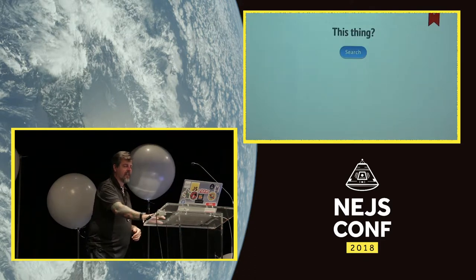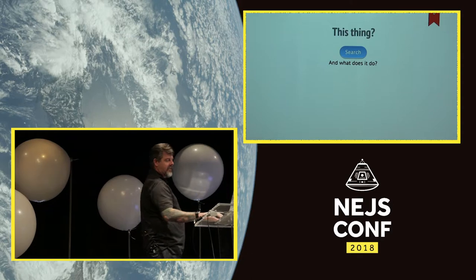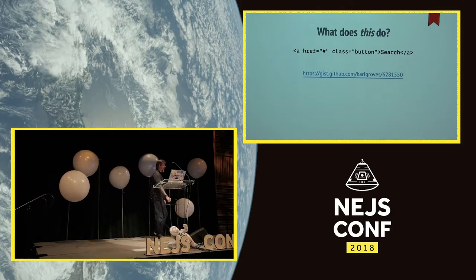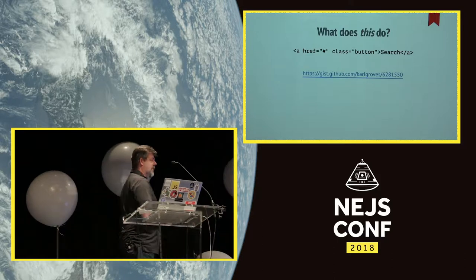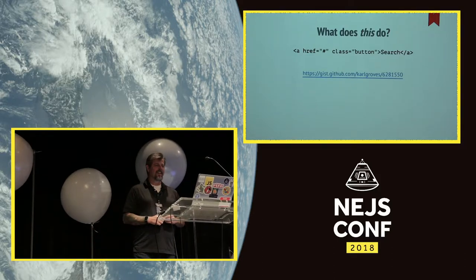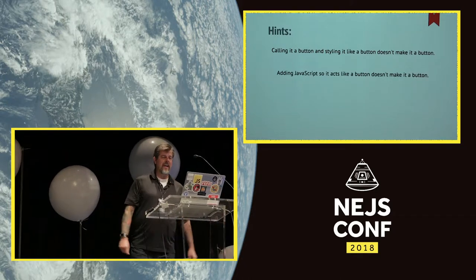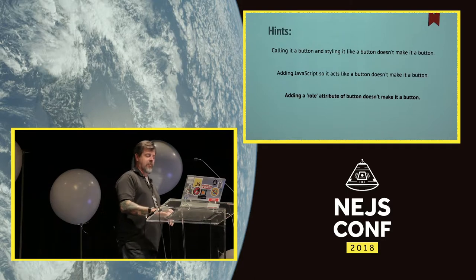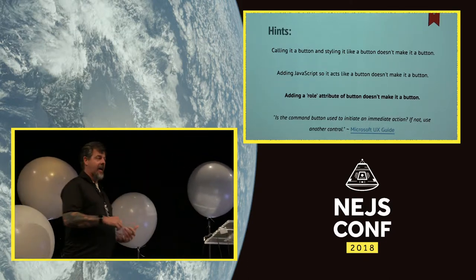What is this thing and what does it do? It's a button, and you click it, and it does what? Searches. The hypertext reference with the pound sign — anybody know what that is? It's a fragment identifier separator. Developers think it does nothing. Calling it a button and styling it like a button doesn't make it a button. Adding JavaScript so it acts like a button doesn't make it a button. And if you add a role of button with ARIA, that doesn't make it a button either. From the Microsoft UX guide: is the command button used to initiate an immediate action? If not, use another control.